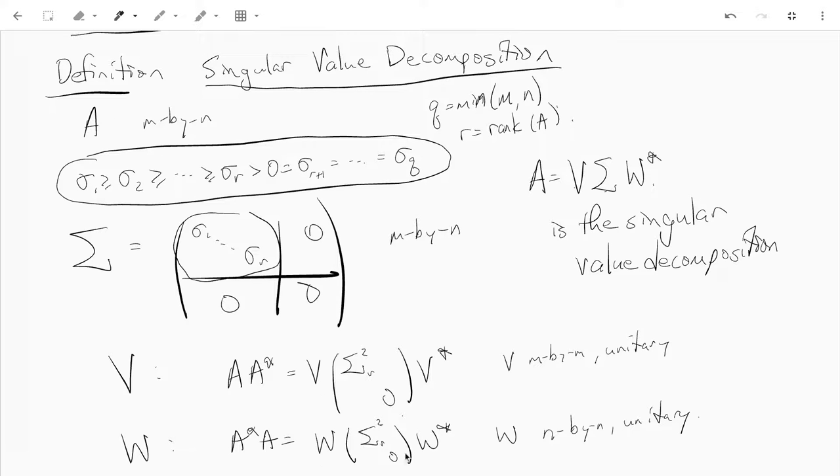And where do V and W come from? Well, V is a unitary matrix which diagonalizes A A star, which is an M by M matrix. And this is called, and so we have the singular value decomposition as this factorization.